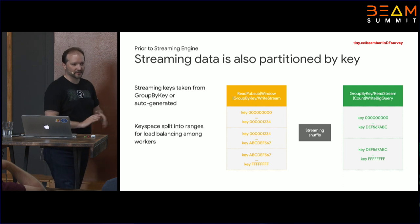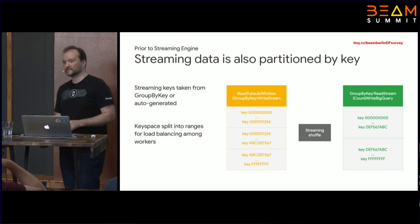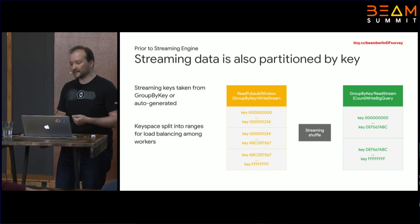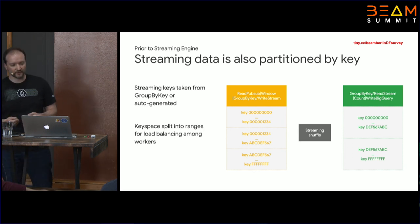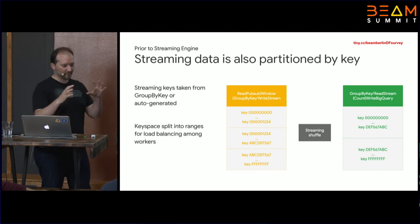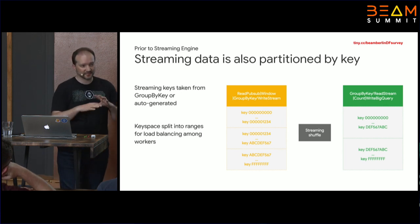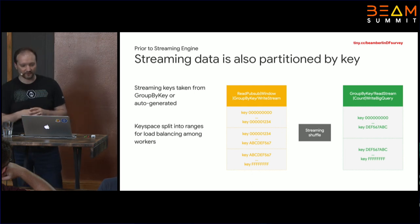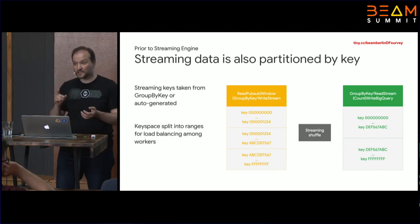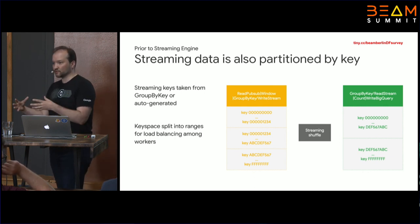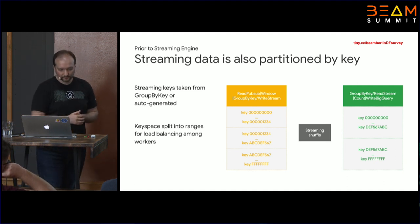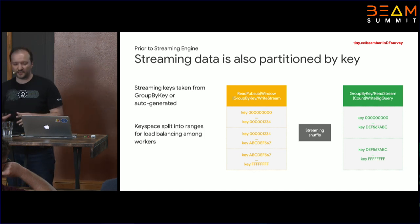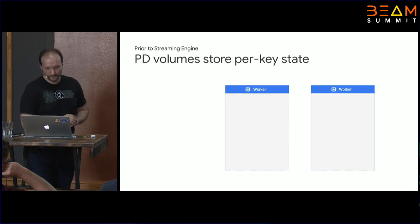What about streaming? Streaming pipelines also need to shuffle data — they do joins and groupings too. In addition, streaming pipelines also store state. That state is divided and sharded into rudimentary blocks of data, partitioned by key. The keys come from your group-by statement; if you're not using a group-by, we auto-generate the key. In any case, your streaming data will be partitioned by key and efficiently allocated among workers. Today, in what we call appliance windmill, the state is stored on persistent disks — volumes attached to worker VMs. Key ranges are associated with particular volumes.